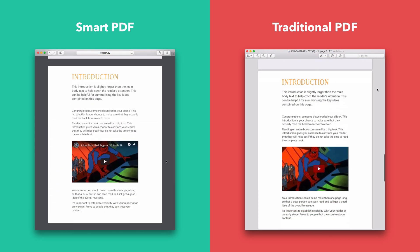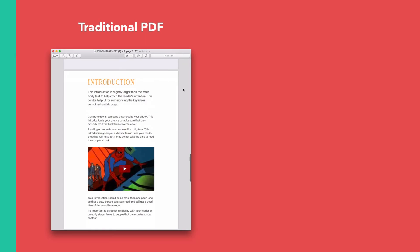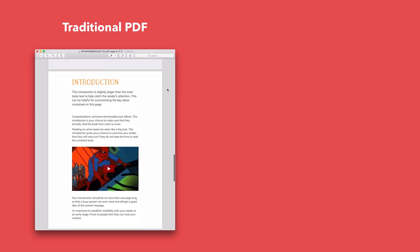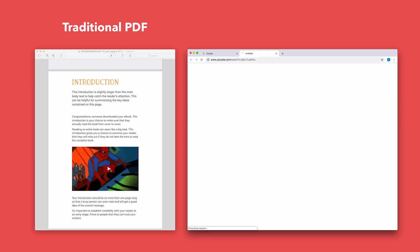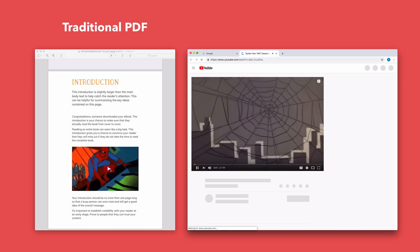Firstly, videos can be played directly inside the Smart PDF. But in the traditional PDF, your readers will be shown a thumbnail of the video instead. When they click that, their web browser will open in another window and they can watch the video there.